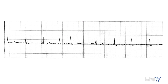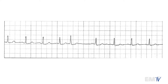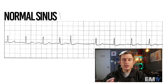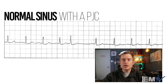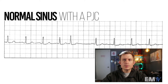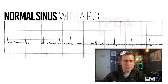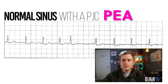So my diagnosis here, as far as the rhythm, would be normal sinus rhythm or sinus rhythm with a PJC. Now, because the patient is pulseless, it would be normal sinus rhythm with PJC, but it's PEA. So the condition is PEA.